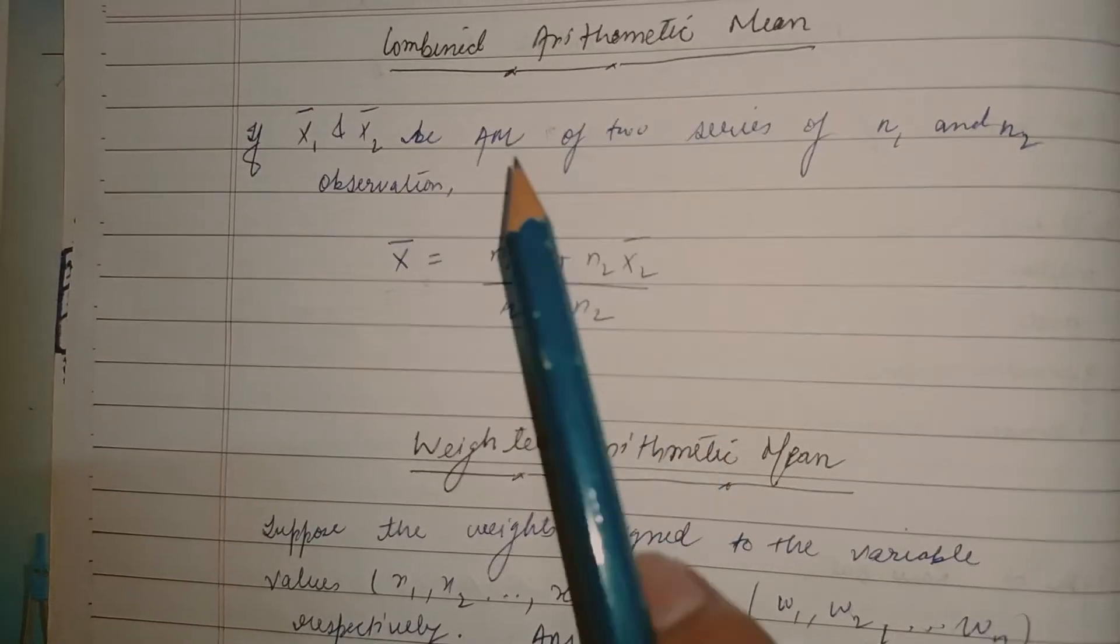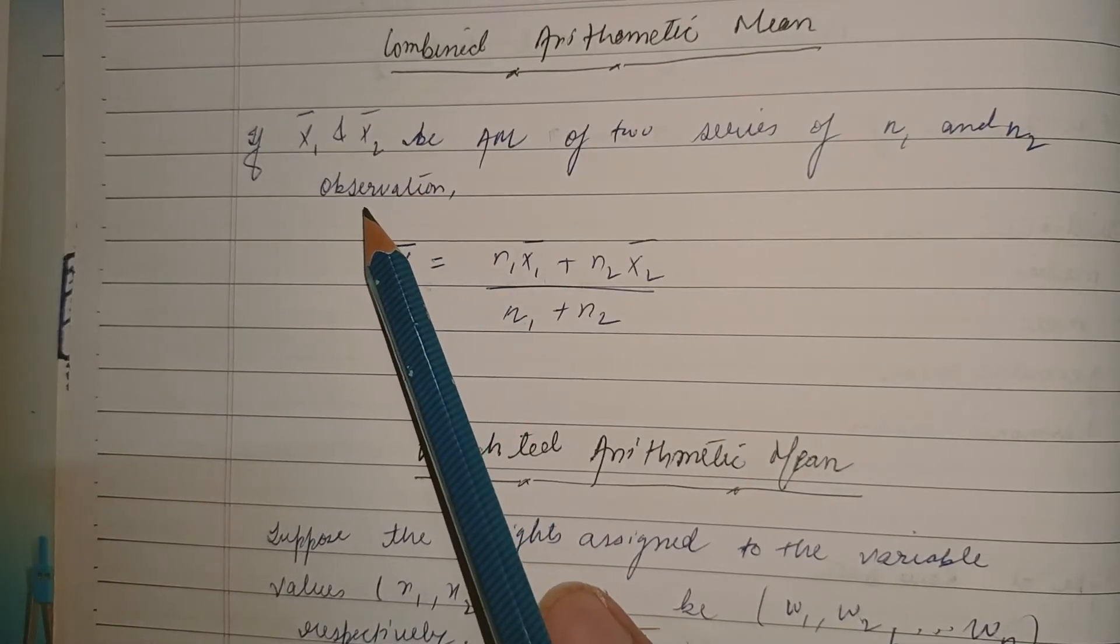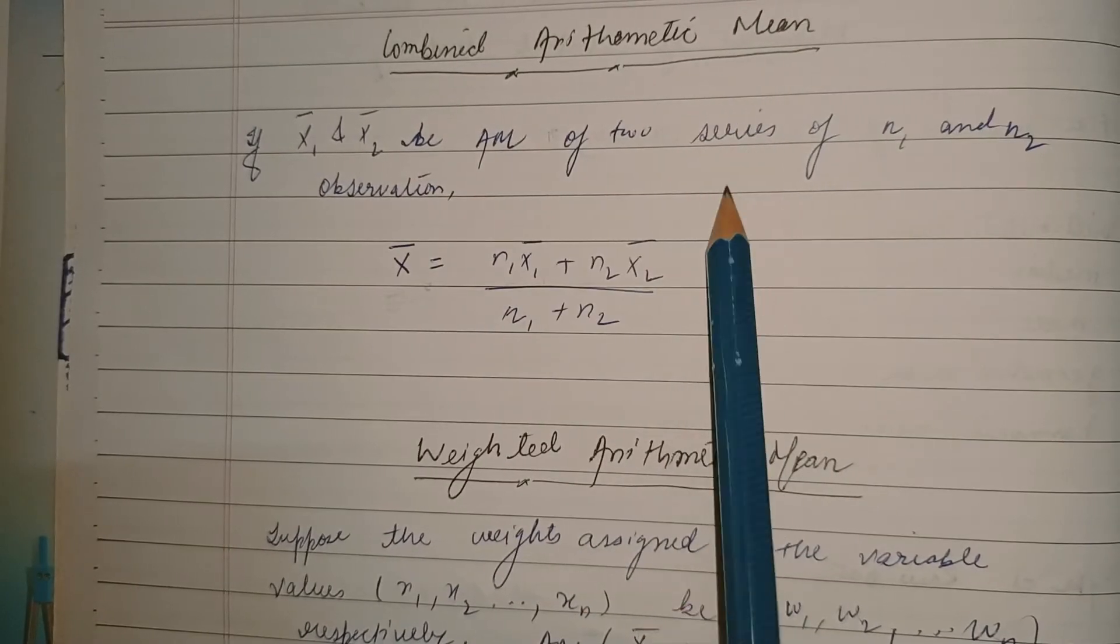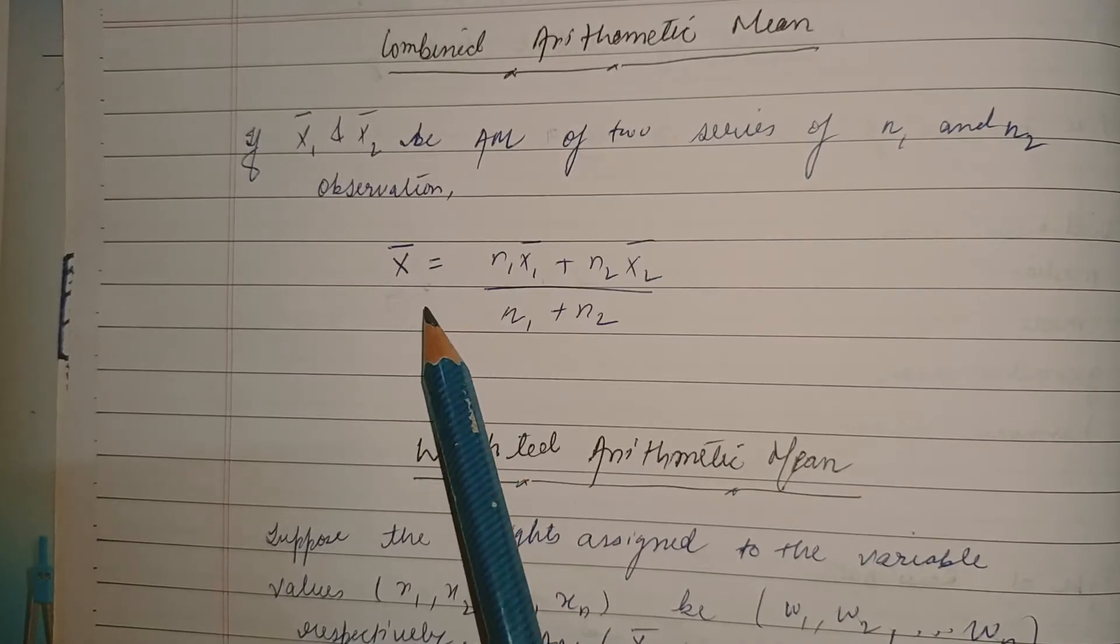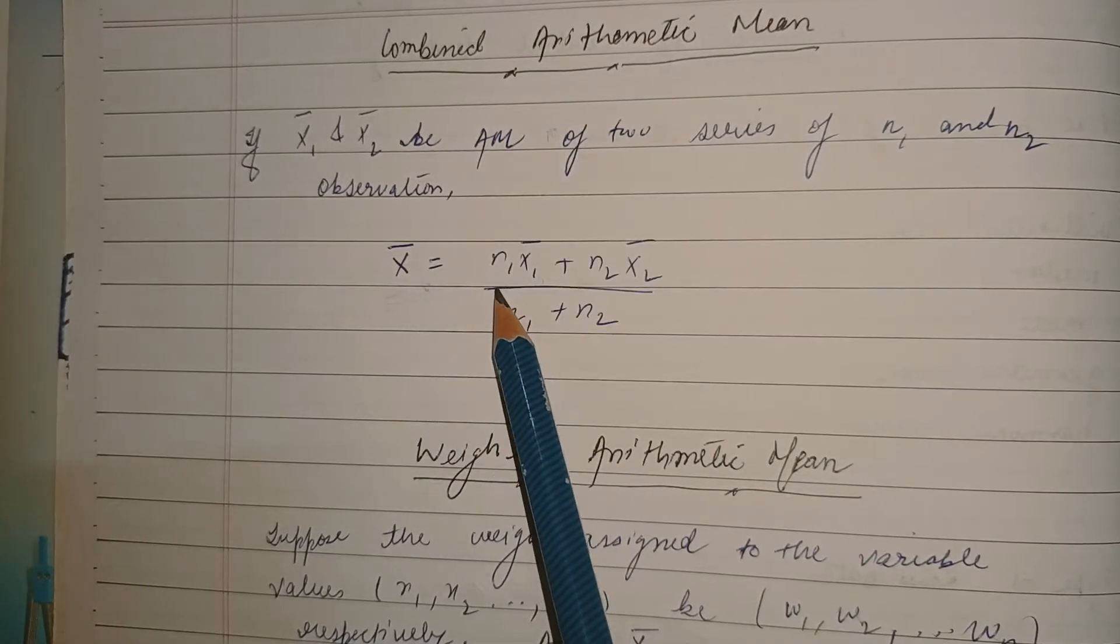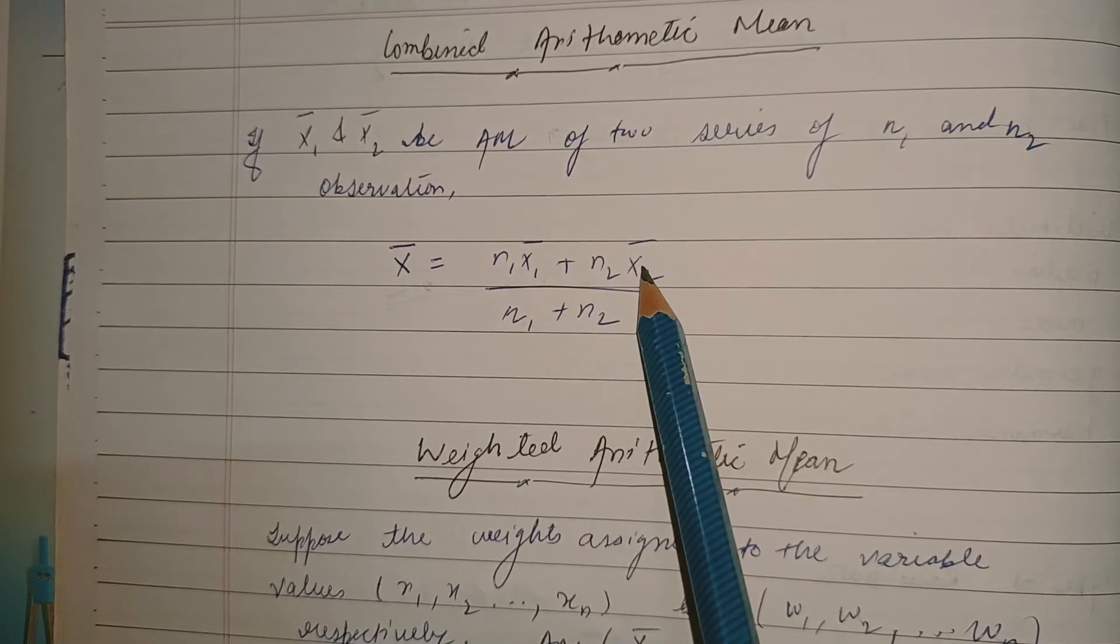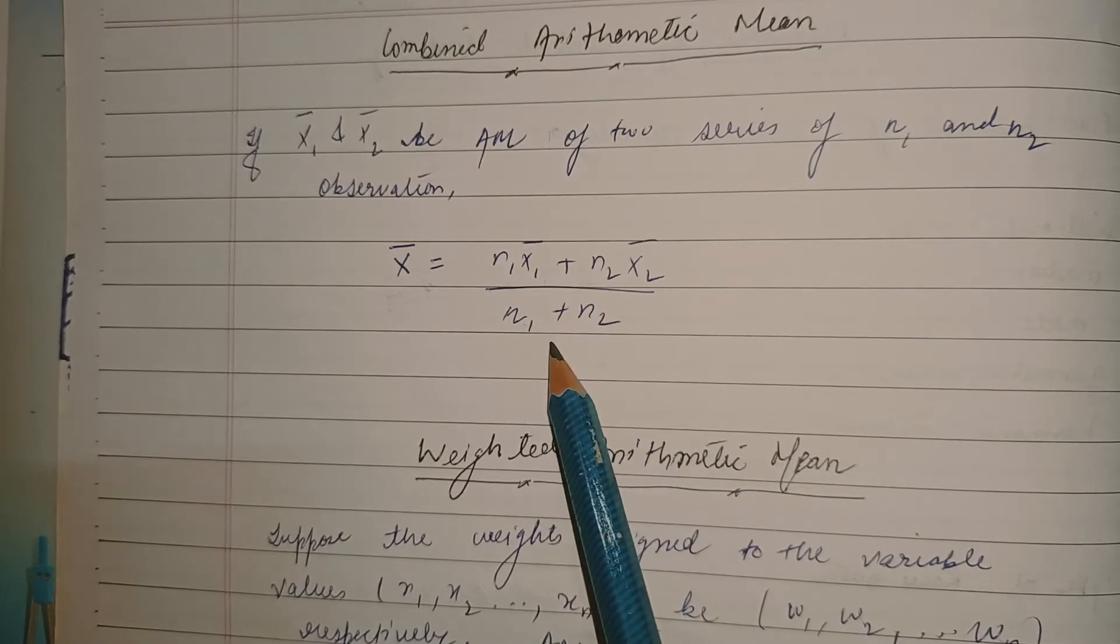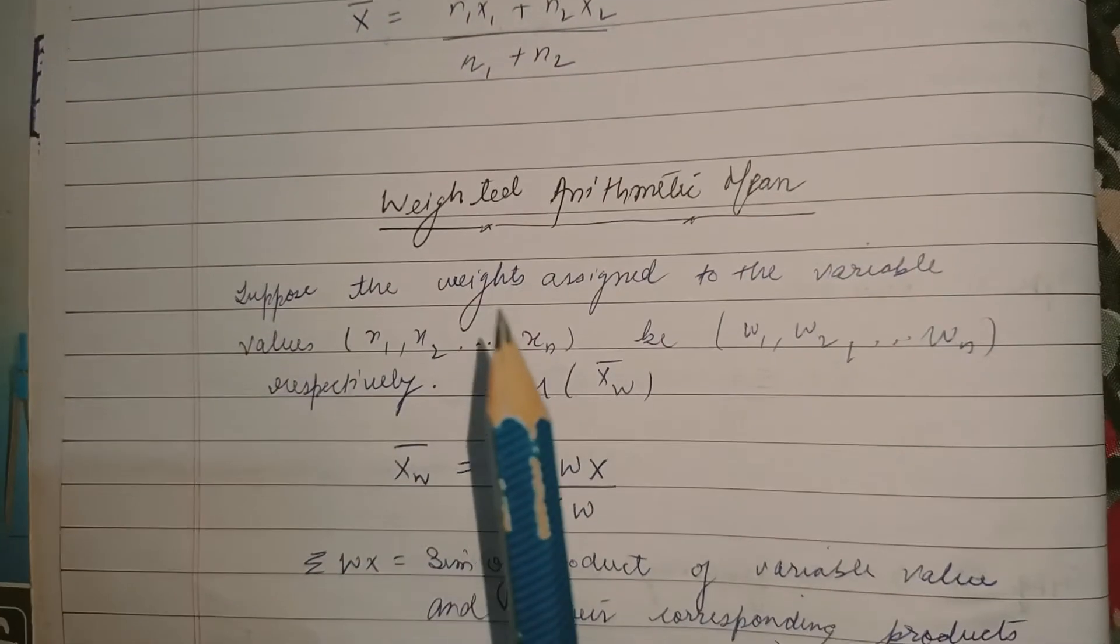Now next up we have combined arithmetic mean. You would be given two arithmetic means x1 bar and x2 bar and two series n1 and n2 of observations. Then combined arithmetic mean would be given by the formula n1 into mean of x1 plus n2 into mean of x2 divided by n1 plus n2. That would be simple, very simple.